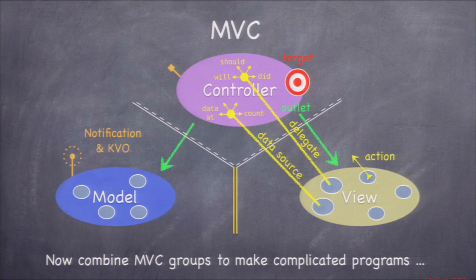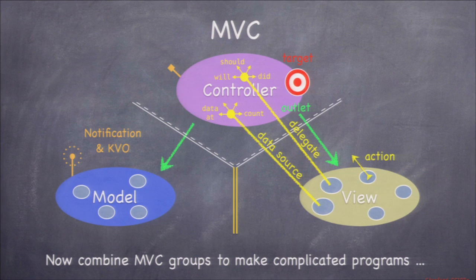What if we want to build a big complicated app with multiple screens? We combine multiple MVCs. An MVC can use, as part of its view, another MVC. An entire MVC can be one of the minions of some bigger MVC, and by cascading that down, we can build more and more complicated applications.